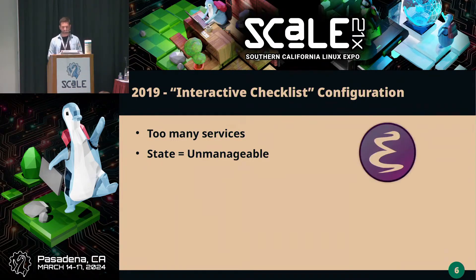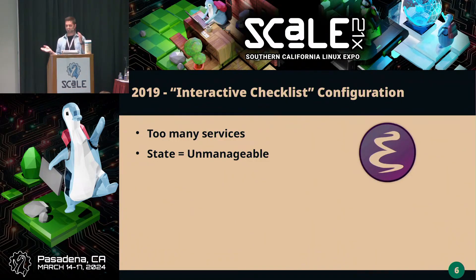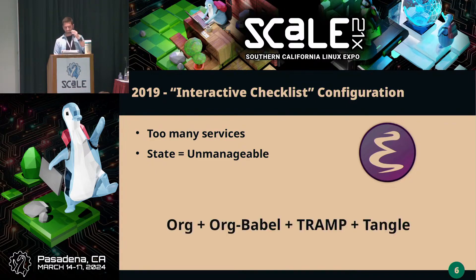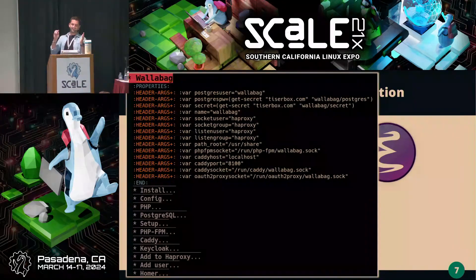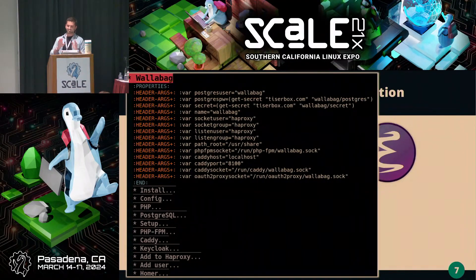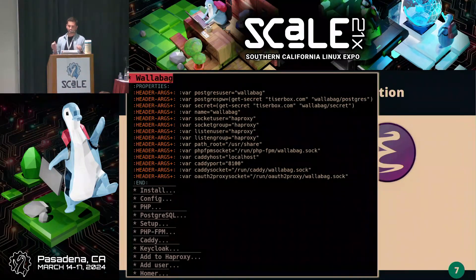I figured out that I was using Emacs to edit things, and everybody knows Emacs is not just an editor, it's also a full operating system. So I thought, shouldn't we use an operating system to configure an operating system? So I used all the features I could find of Emacs — it's essentially an interactive checklist of things I needed to do to install a service on my box.